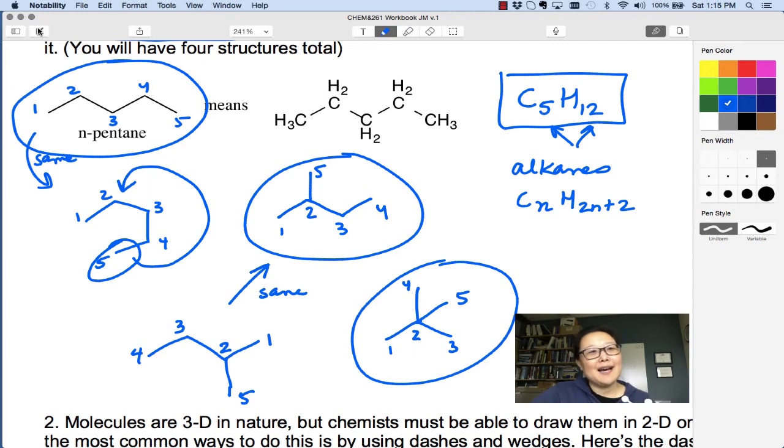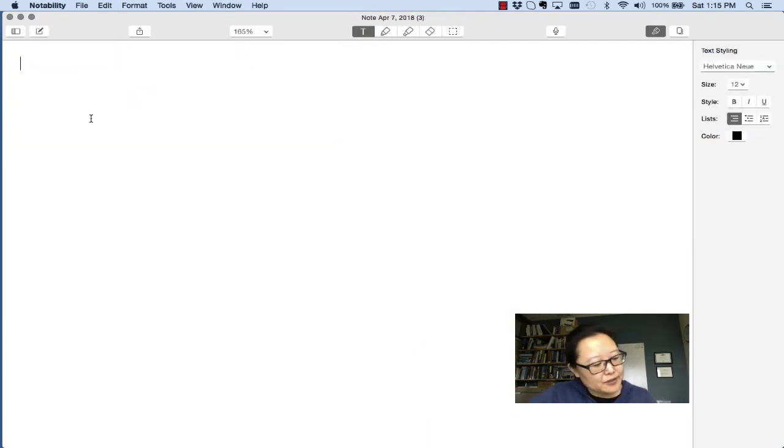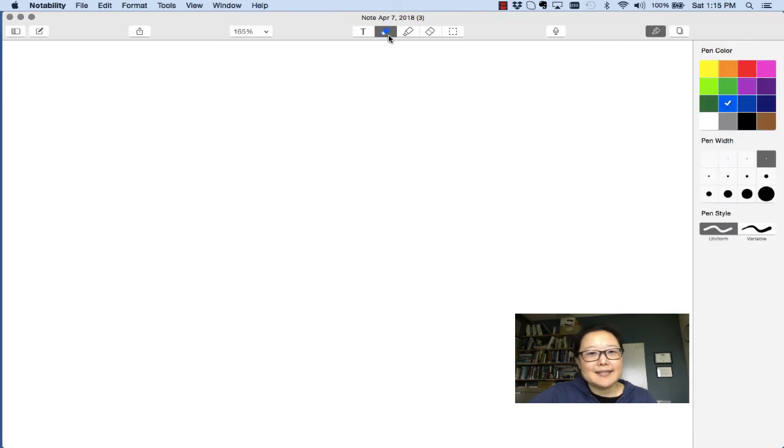So as a practice problem, I would like you to consider C6H14. So 2N plus 2, 2 times 6 is 12, plus 2 is 14. So I want you to do the same thing, and just to give you a hint, the first thing you should do is just draw the six carbon long chain version, n-hexane. 1, 2, 3, 4, 5, 6. So starting with this, how many isomers can you get? And let's come back and check our answers.